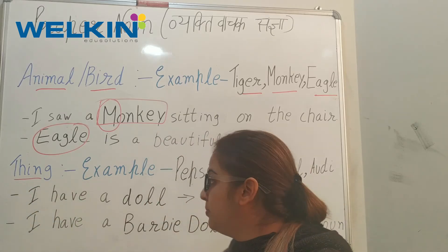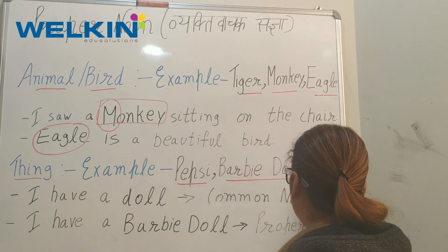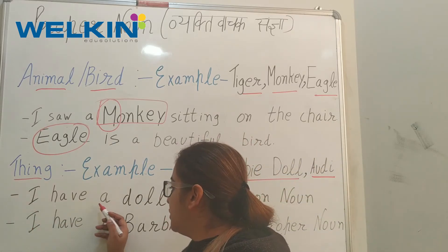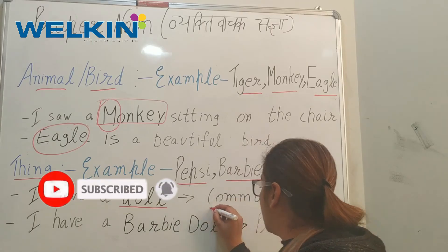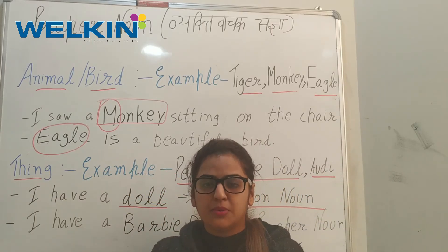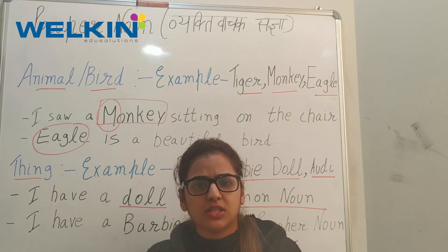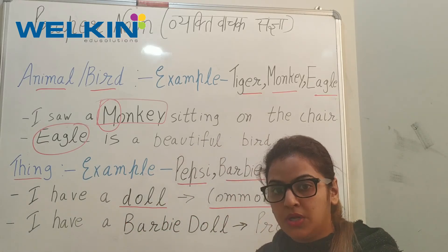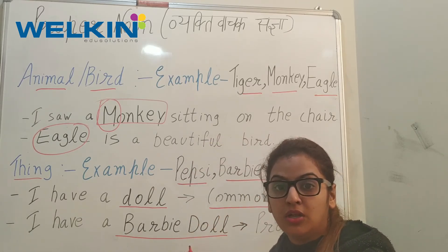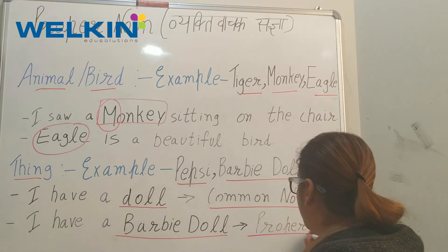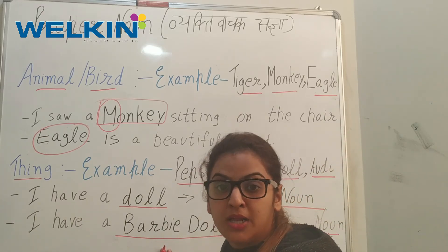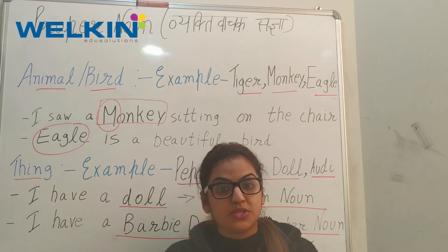Next is things. Examples include Pepsi, Barbie Doll, and Audi. For instance, 'I have a doll' — doll is a common noun because it is not justified which doll it is; it could be any Barbie or Cinderella. But 'I have a Barbie Doll' — Barbie Doll is a proper noun because we have mentioned which specific doll it is.